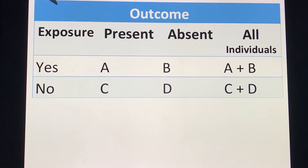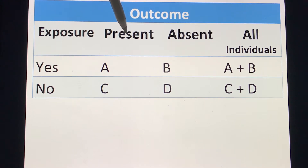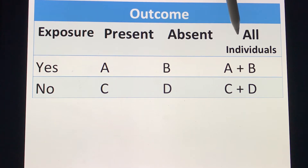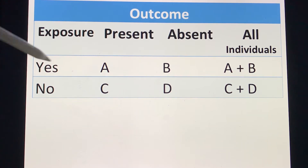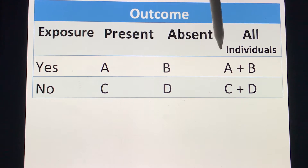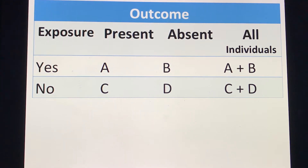So this is your variable — the outcome. The other variable is exposure, the presence of a disease, the absence of the disease, and the total of all individuals. Those who were exposed would be A plus B, and those who are not exposed would be C plus D. Please take note of this.